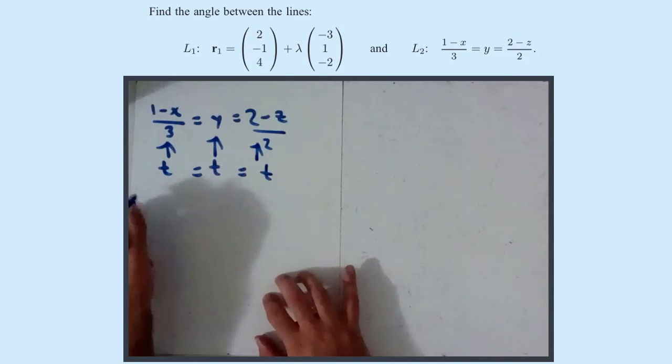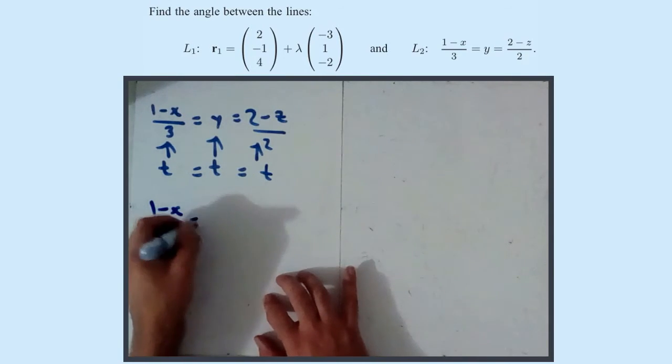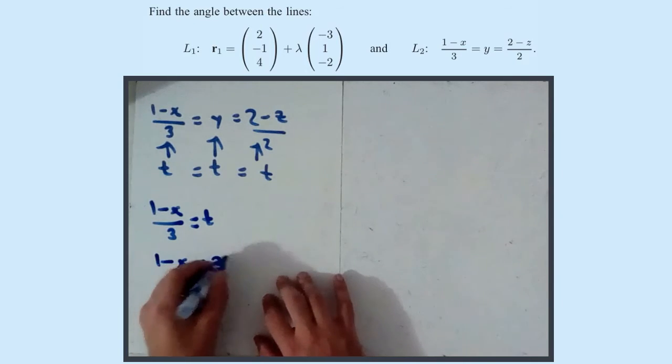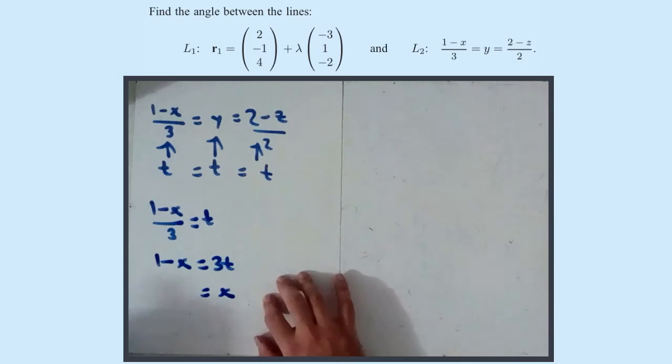So if (1 - x)/3 equals t, well that must mean 1 - x equals 3t. So x must equal 1 - 3t.